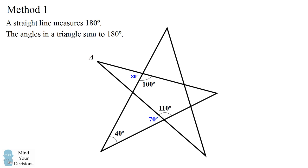We now use the principle that the angles in a triangle sum up to 180 degrees. In the triangle with 40 degrees and 70 degrees, the final angle will be equal to 180 minus 40 minus 70. So the final angle in this triangle is 70 degrees.